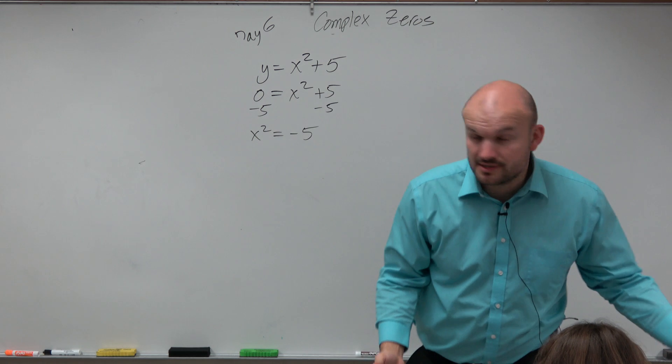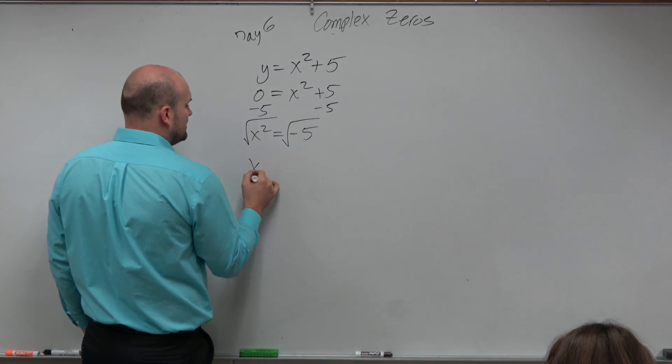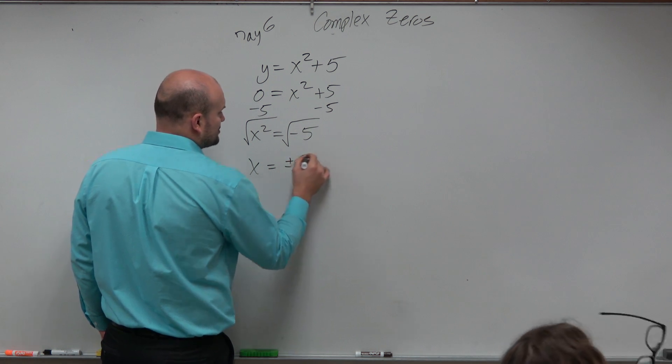Now I need to take the square root. By introducing the square root, remember we have to include plus or minus. So x = ±√(-5).